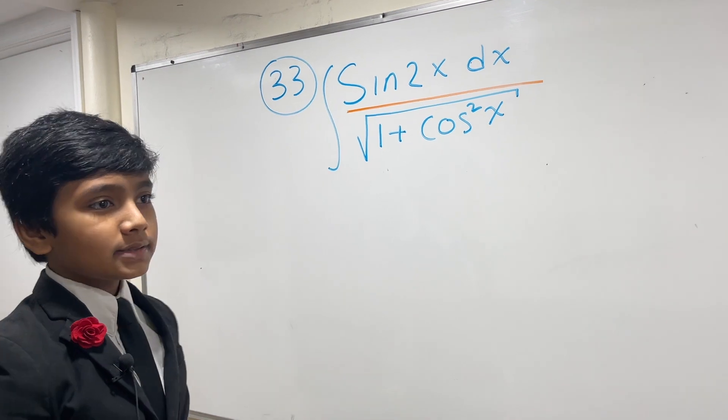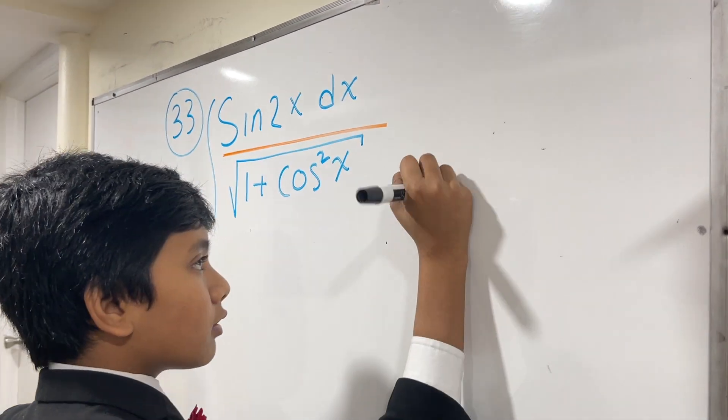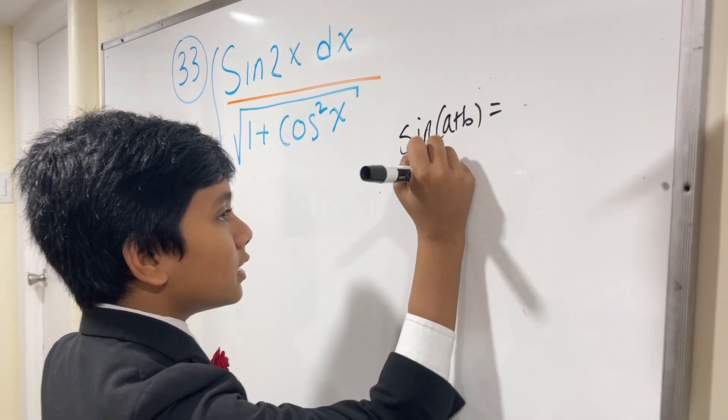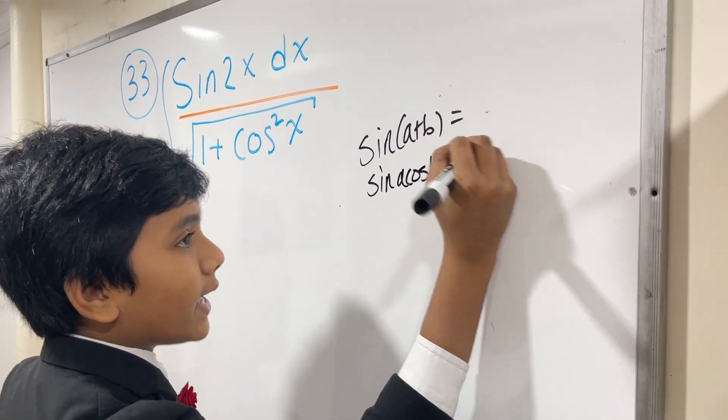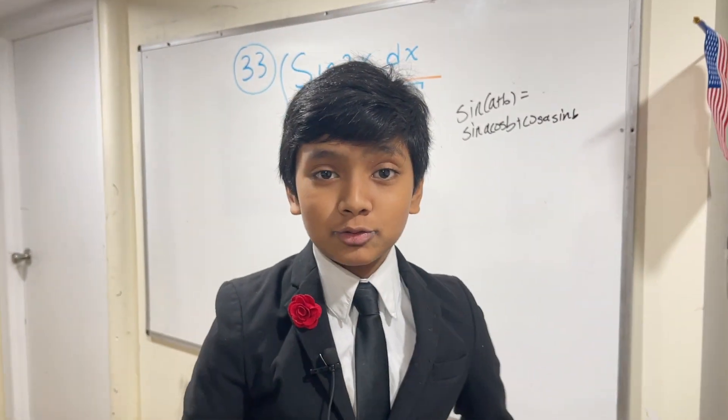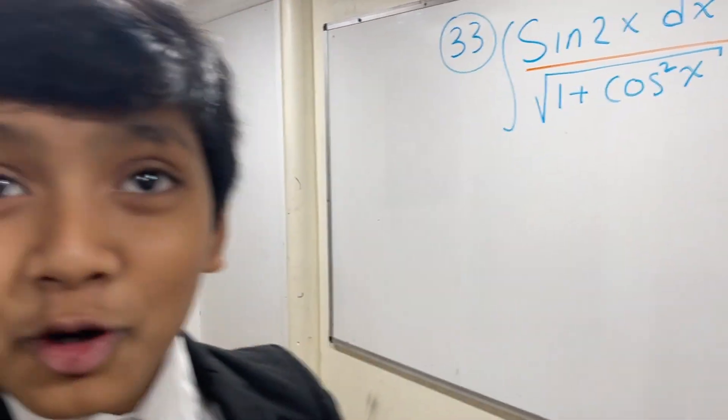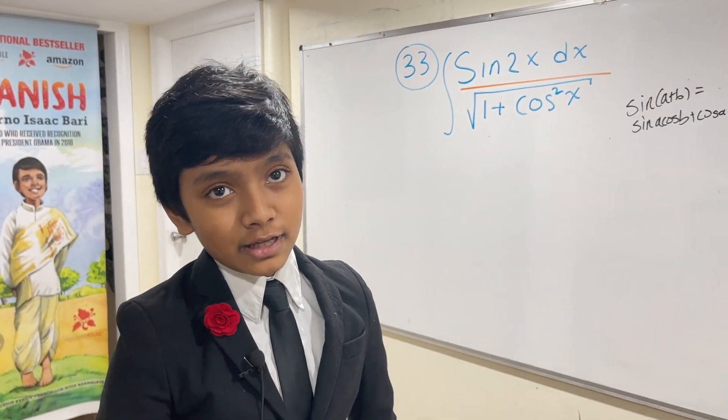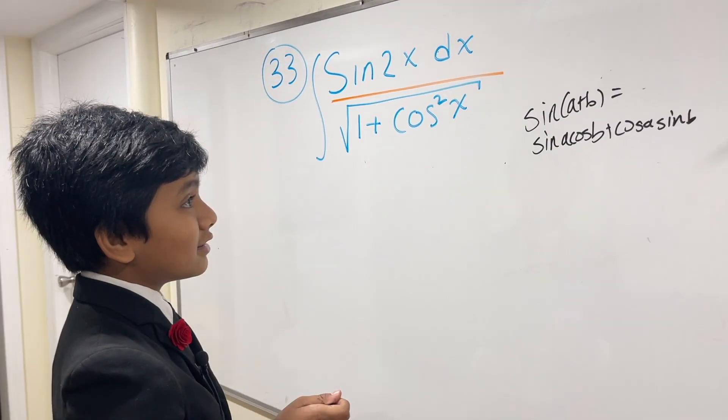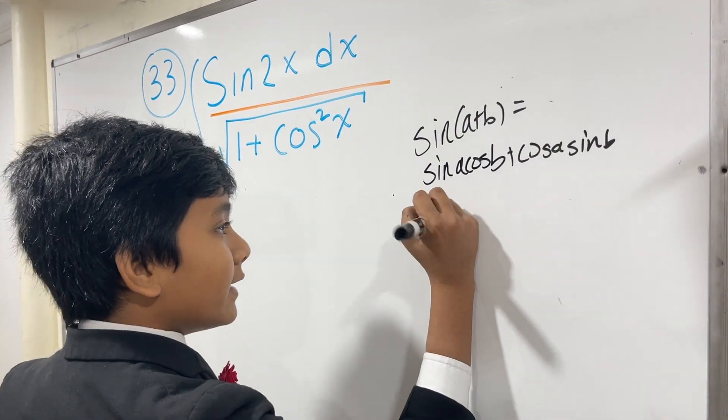Here we have sine 2x. And the thing is, I think you might have seen this before, but we already know that sine of a plus b is sine a cos b plus cos a sine b. Now can you tell me what 1 plus 1 is? 2. So now we can say sine 2x is just sine x plus x.